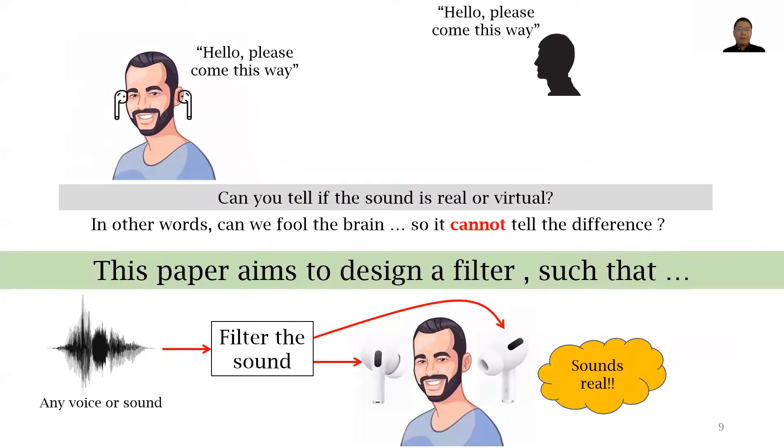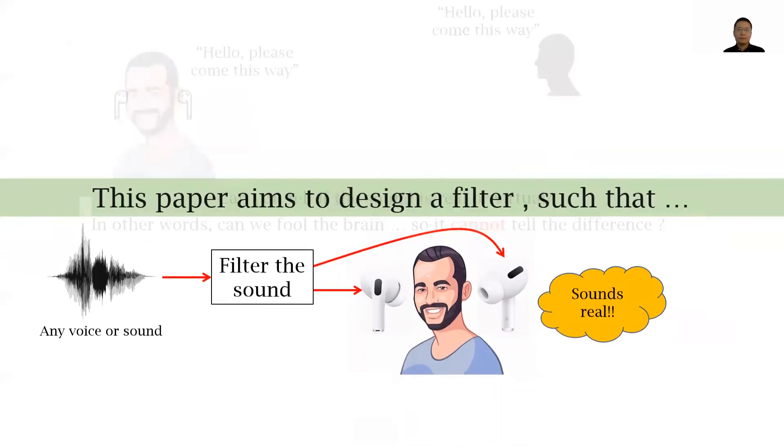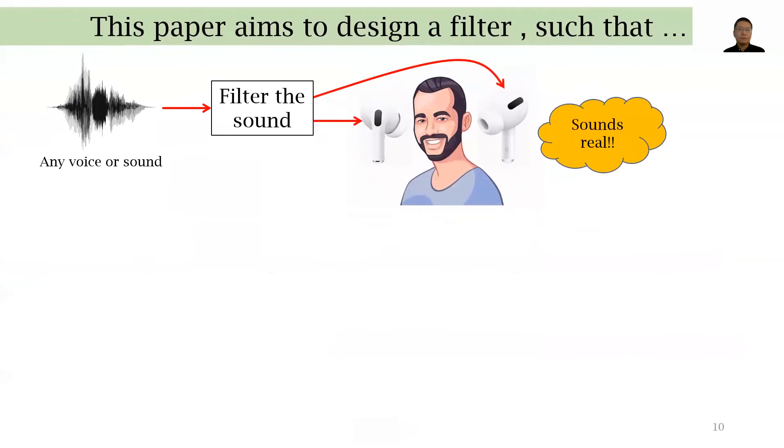This paper aims to design a filter such that when it is applied to the original sound source signal, it can trick the brain to believe that the virtual sound from the earphone is actually the real sound. And we call this filter head-related transfer function, or HRTF.